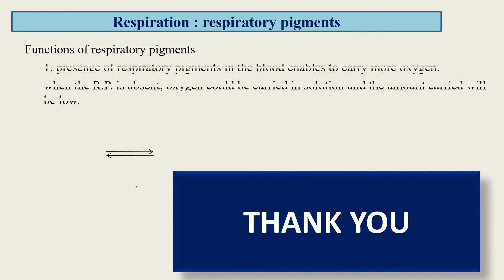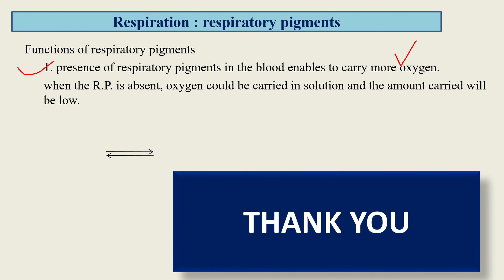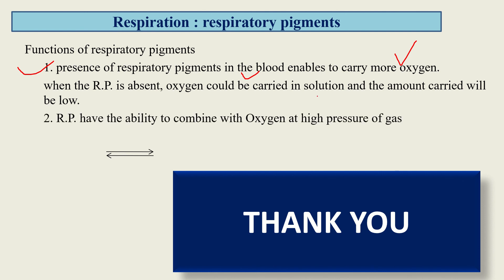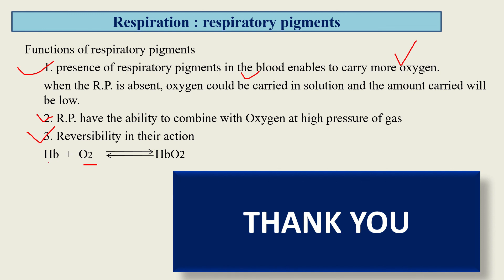The functions of respiratory pigments are as follows. Due to the presence of respiratory pigments in the blood, they can carry more oxygen. When respiratory pigments are absent, oxygen could only be carried in solution and the oxygen-carrying capacity would be low. Respiratory pigments have the ability to combine with oxygen at high pressure of gas. One important function is reversibility — they can reversibly combine with gases. For example, hemoglobin combines with oxygen reversibly, and when it reaches the tissues, it again dissociates and releases the oxygen.